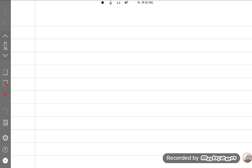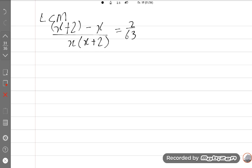We will take LCM. LCM is X into X plus 2, and in the numerator, X will be cancelled with X, leaving only minus X. So this is equal to 2 upon 63.